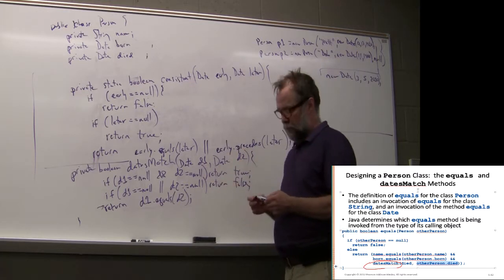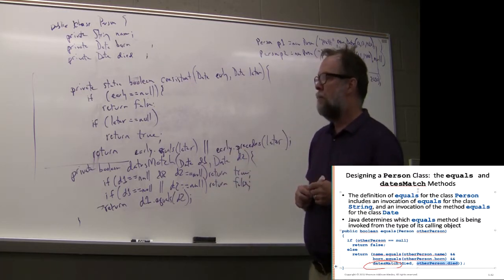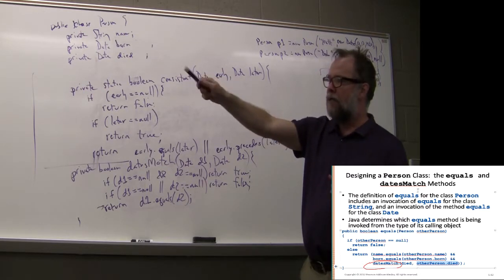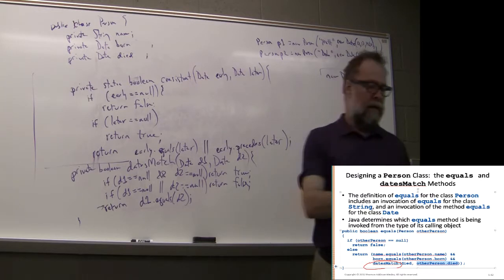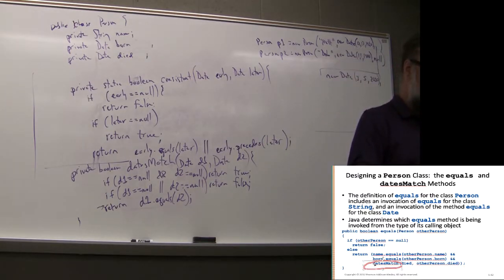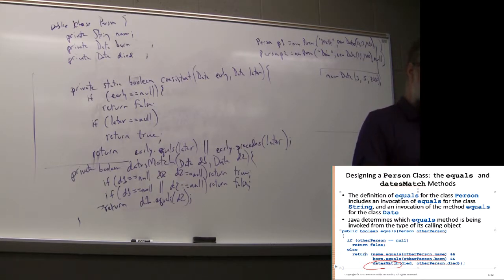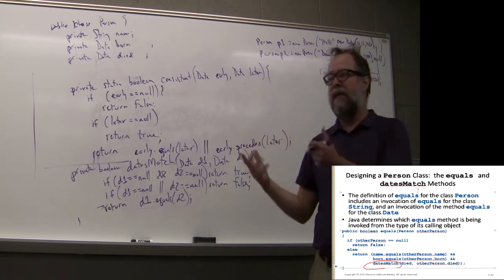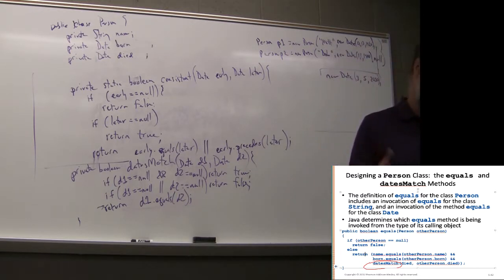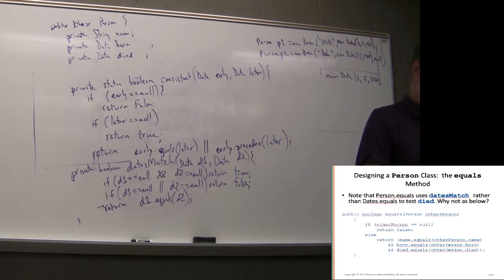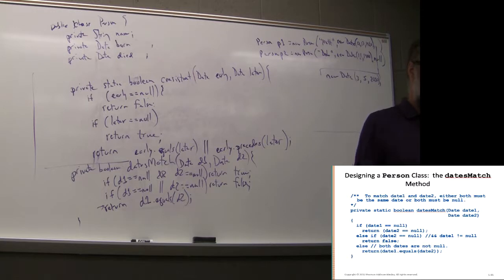So two Persons are equal if they have the same name, same birth date, and same death date (which might both be null — that's okay). The equals method also includes an up-front null check: if otherPerson is null, return false immediately. This prevents a NullPointerException when the dereferencing dot operator is used on a potentially null argument. Every equals method should have this structure.